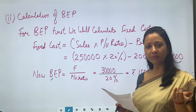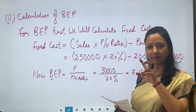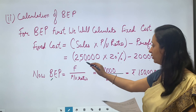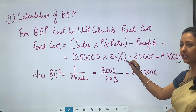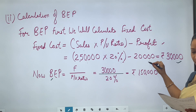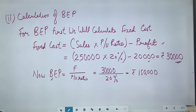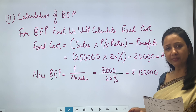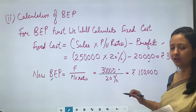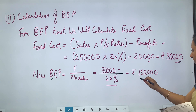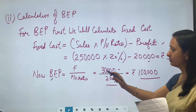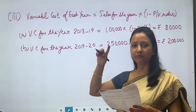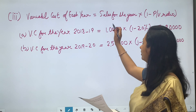Fixed cost = (sales × PV ratio) − profit = (2,50,000 × 20%) − 20,000 = 50,000 − 20,000 = Rs. 30,000. BEP = fixed cost ÷ PV ratio = 30,000 ÷ 20% = Rs. 1,50,000. Variable cost of each year: formula = sales × (1 − PV ratio). For 2018-19: 1,00,000 × 80% = Rs. 80,000. For 2019-20: 2,50,000 × 80% = Rs. 2,00,000.